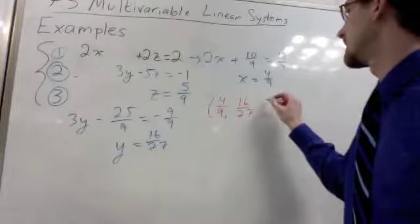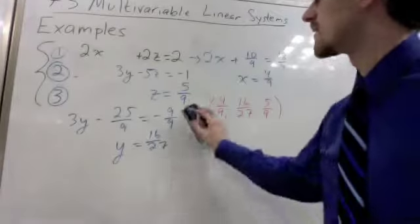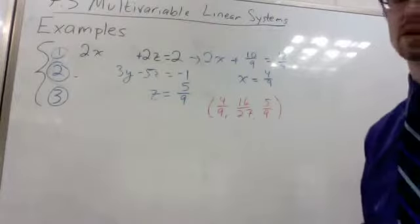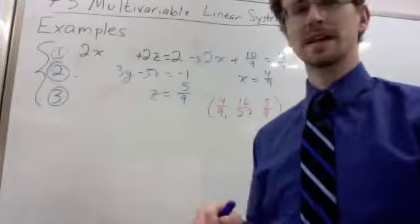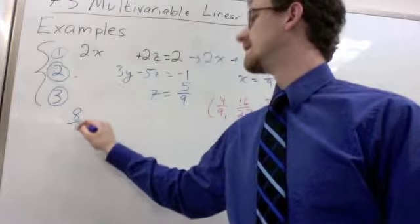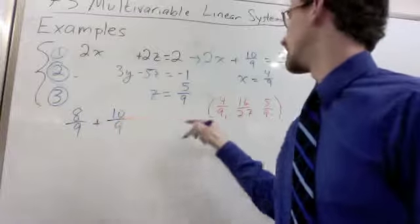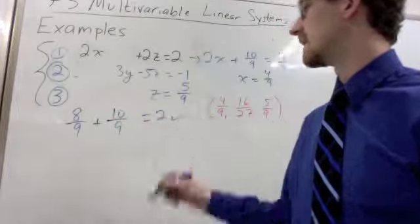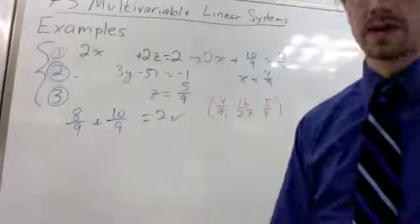Which gives us the solution, the ordered triple: 4 ninths, 16 twenty-sevenths, and 5 ninths. However, we always want to check our answers with our original equations. Especially when we're dealing with fractions. Because it's easier to make mistakes with fractions. In fact, I've had to re-record this once now because I made a mistake. 2 times 4 ninths is 8 ninths. Plus 2 times 5 ninths, which is 10 ninths. 8 ninths plus 10 ninths is 18 ninths, which is indeed 2. That's good.